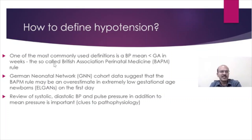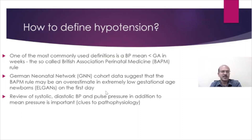How do we define hypotension? There is no clear definition. One of the most commonly used definitions is a mean blood pressure less than gestational age — the so-called BAPM rule, which has been practiced for many years. However, the German Neonatal Network data suggested that the BAPM rule may overestimate hypotension in extremely low birth weight babies on the first day, so you may not really need that number.